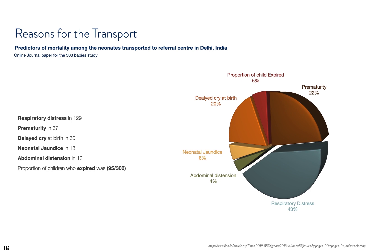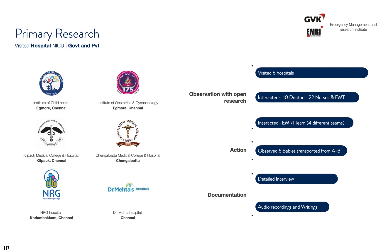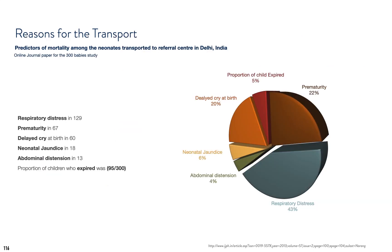Instead of going through voluminous amounts of data and huge blocks of text, the data is now clear: 43% of babies are transported for respiratory reasons. If I devise a respirator product, my problem is solved. Decisions can be made faster and smarter. It's not about large amounts of text or pages — it's about choosing the best pages.